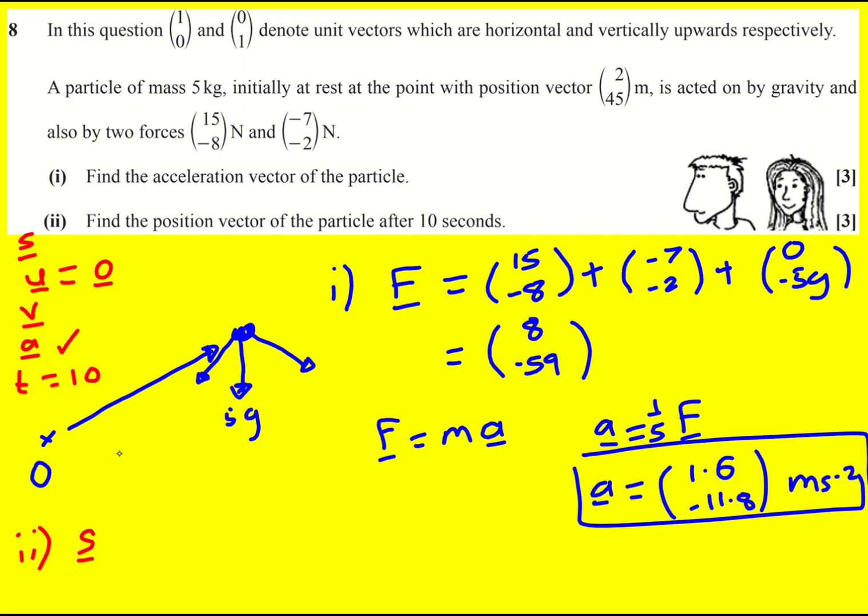Three things, so we can use the SUVAT without v in. S equals u, this is a vector now, t, plus a half a t squared.